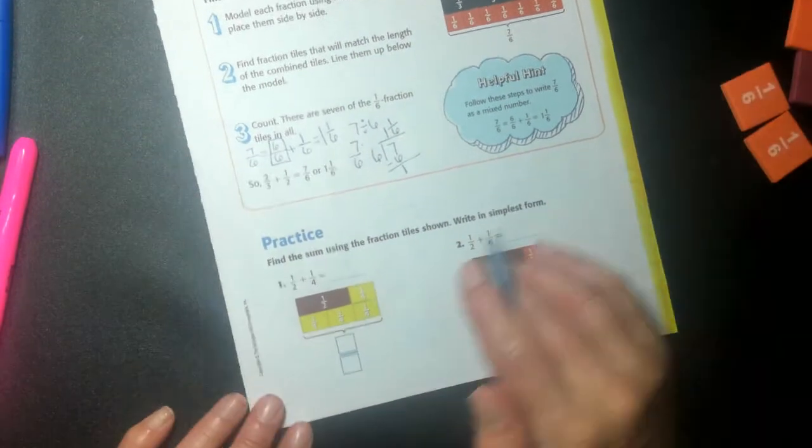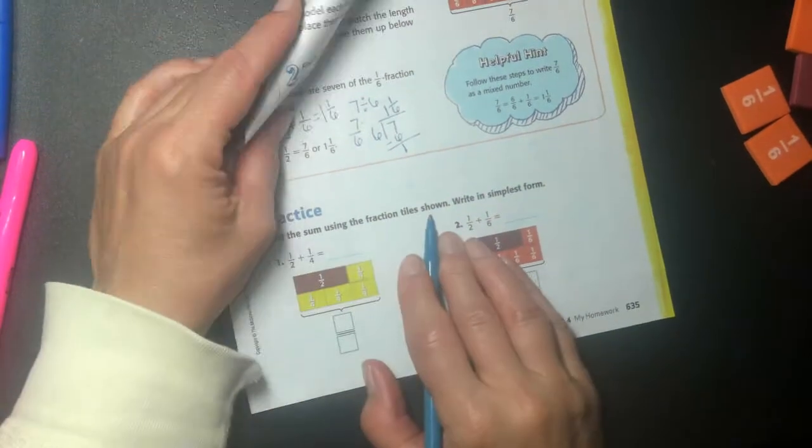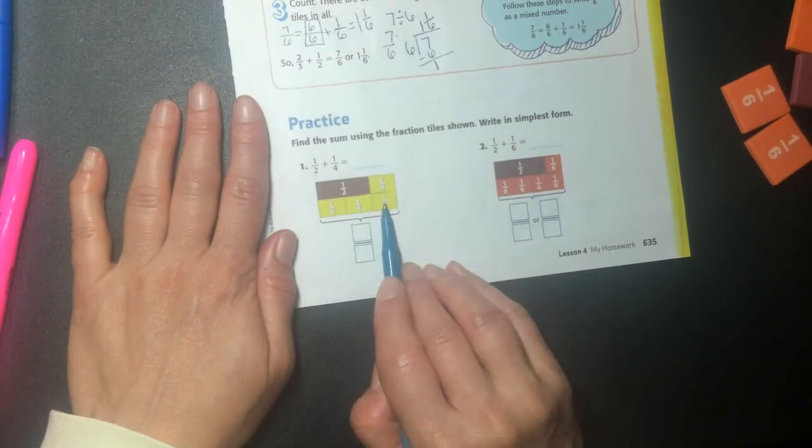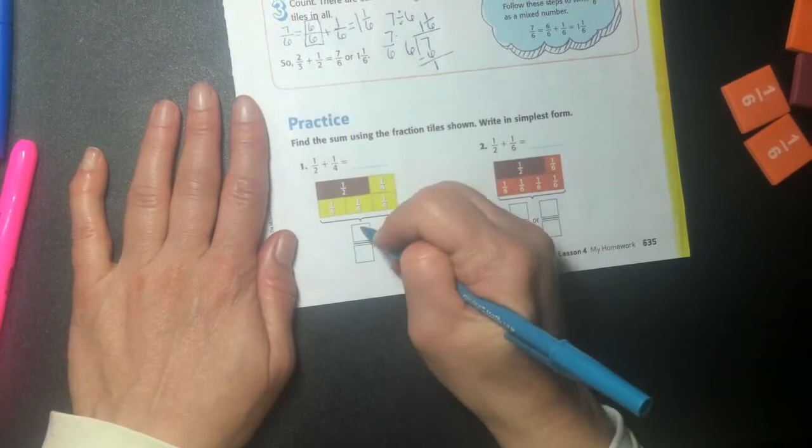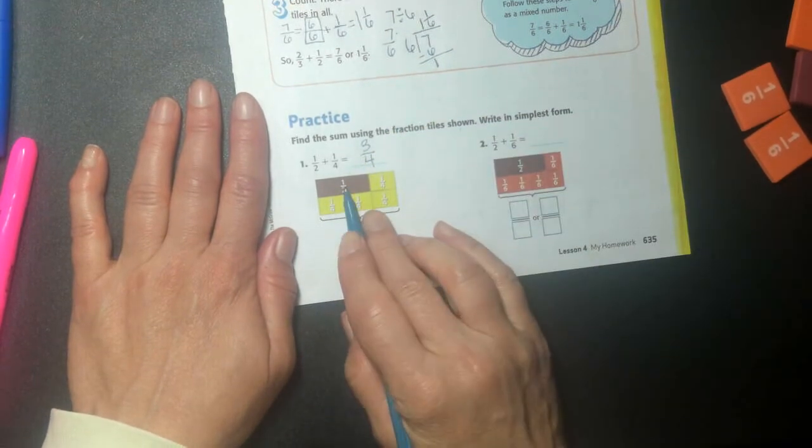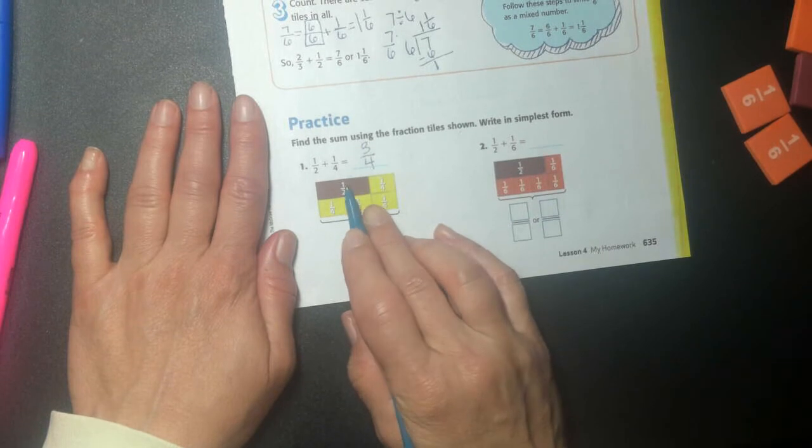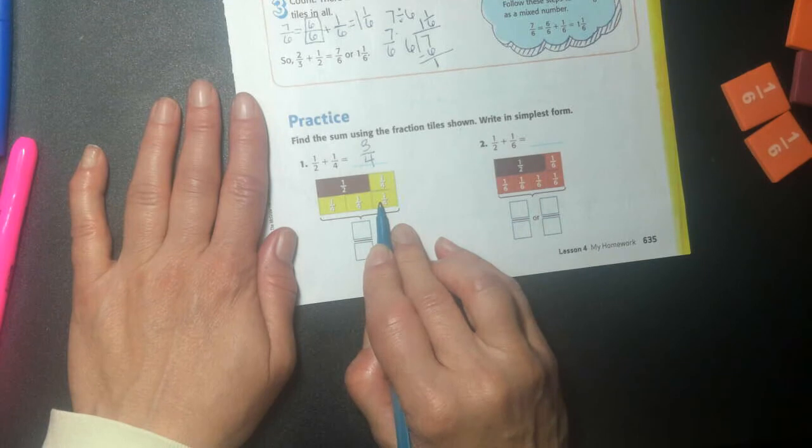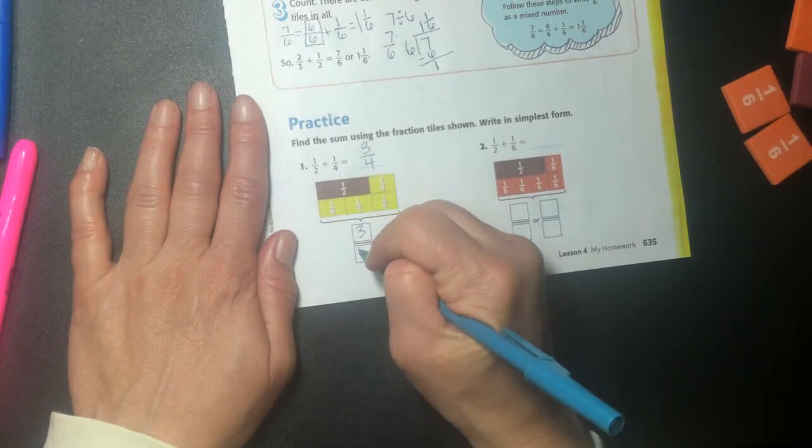Alright. I'm going to do find the sum using the fraction tile shown. So, right, if you're at home now, you just go one, two, three fourths. Right? I took my one half. I turned it into two fourths. And then I added one more fourth. And now I have three fourths.